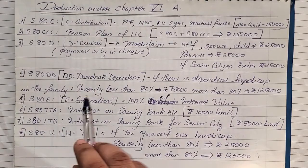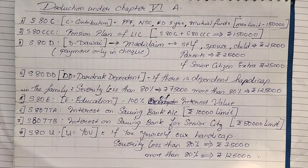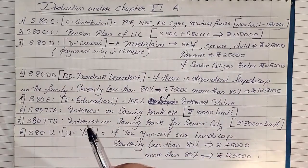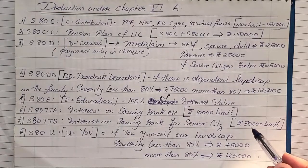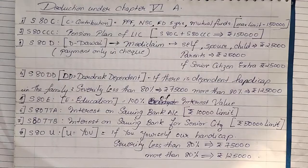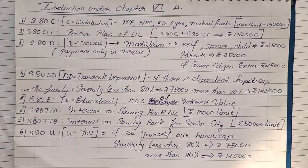Section 80E is for education — 100% of the interest on a loan taken for higher education is deducted. Sections 80TTA and 80TTB are both for saving bank interest. 80TTA is for normal people with a limit of 10,000 rupees, while 80TTB is for senior citizens with a limit of 50,000. Section 80U — 'U' stands for you yourself. If you are handicapped, less than 80% severity gives 75,000 deduction and above 80% gives 1 lakh 25,000.